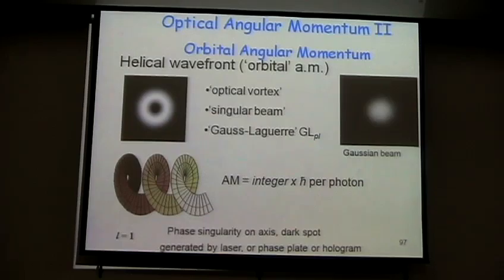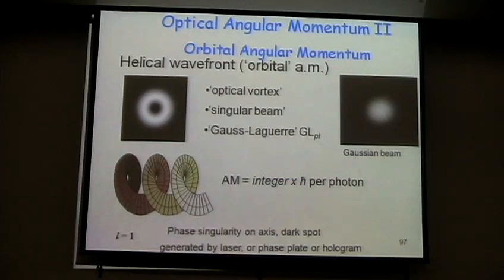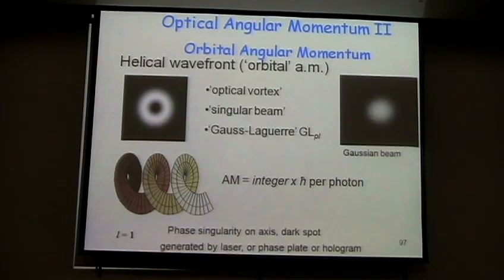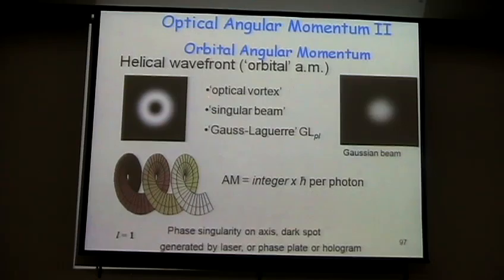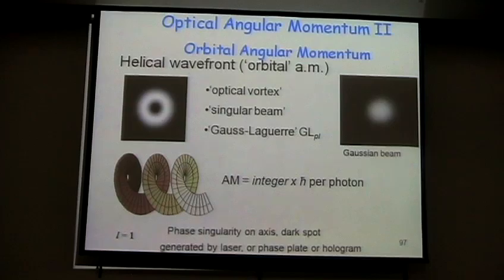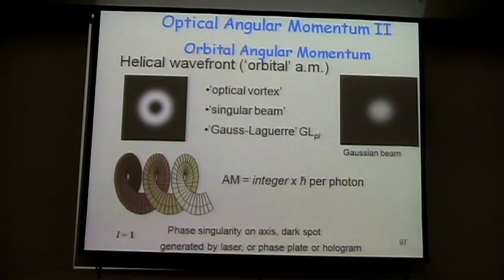Somebody asked what happens if particles are not birefringent. I now want to use orbital angular momentum for non-birefringent particles. What is orbital angular momentum and how can I create it? A Gaussian beam can be linearly or circularly polarized. But if I create helical wave fronts, these are called optical vortices, singular beams, or Gauss-Laguerre beams with charge L, and their Poynting vector forms a spiral. Depending on how I produce the beam, it carries different amounts of orbital angular momentum.